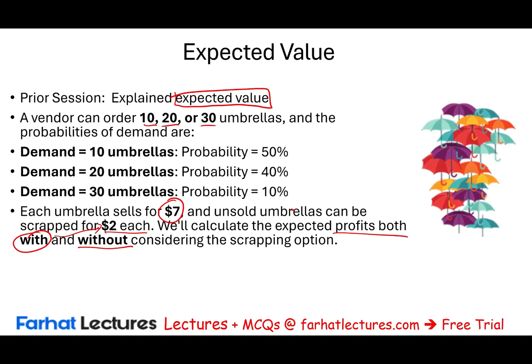That additional business decision could make a difference in the outcome and could make a difference in your decision as well. This is the data we're going to be working with. You can download the slides from farhatlectures.com, because on each slide I'm going to be computing the expected outcome for a different scenario — if you order 10, what's the possible outcome based on the probabilities, the selling price, and the scrap value.